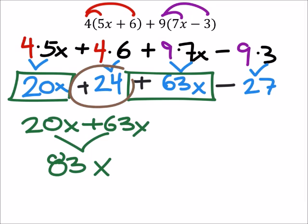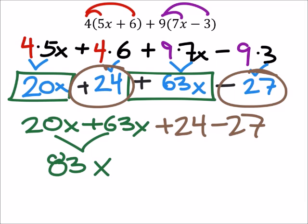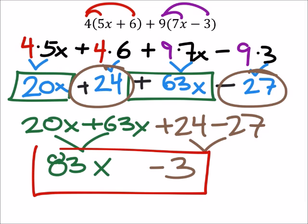Now let's look at our constants. I've got this plus 24, positive 24, minus 27. So I've got this 24 minus 27. And 24 minus 27 is negative 3. And that actually right there is the answer. Simplified.